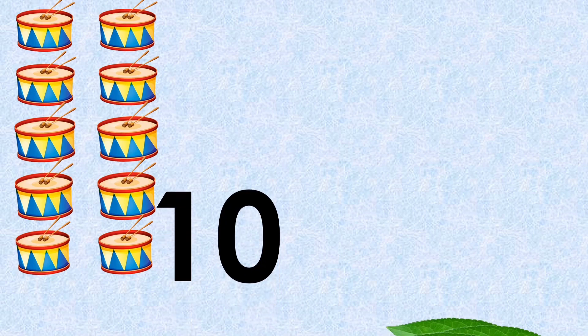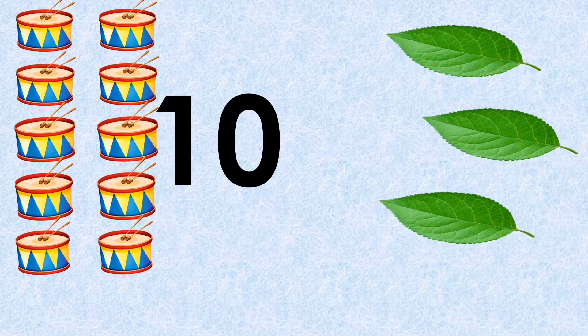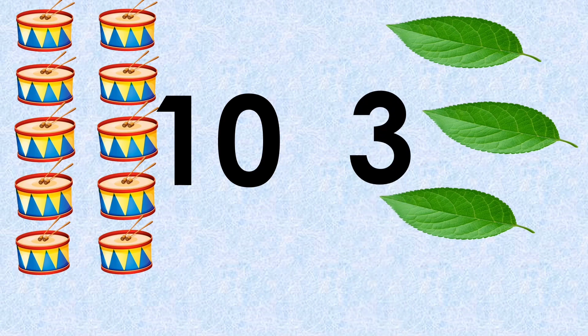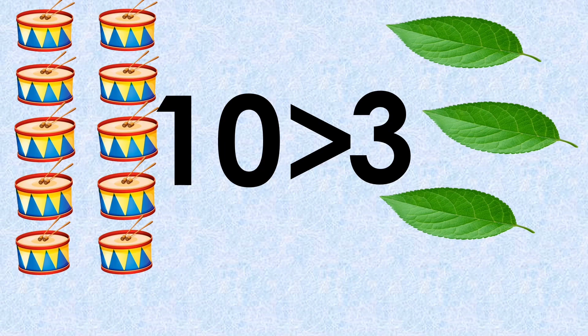Okay, one more example. Number of drums: ten. Number of leaves on the other side: three. Which number is bigger? Yes, ten. So we will put the greater than sign. How we will read this? Ten is greater than three.